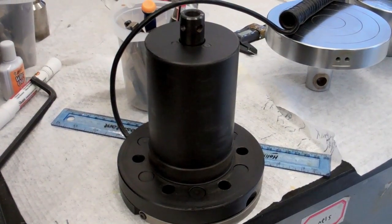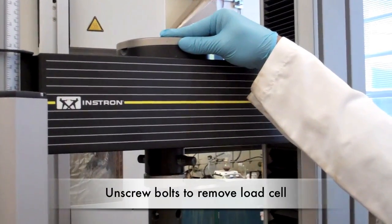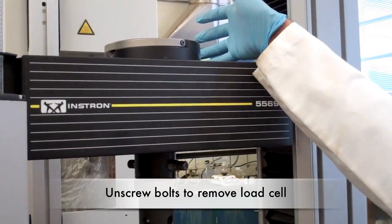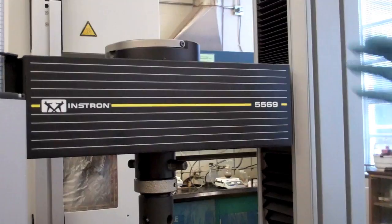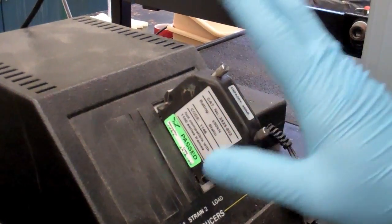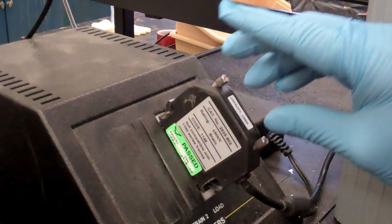Change load cells by unscrewing the three bolts at the top, unplugging it, and pulling up on the handle to remove it. Be careful when switching load cells and make sure to switch off the machine before installing the load cell and to plug in the load cells with the port behind the machine.